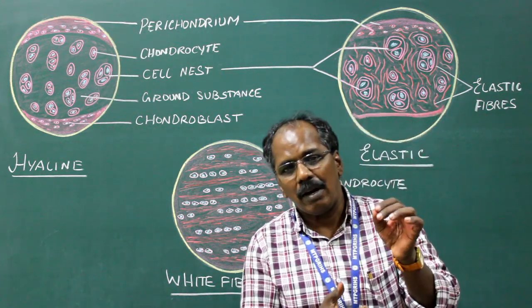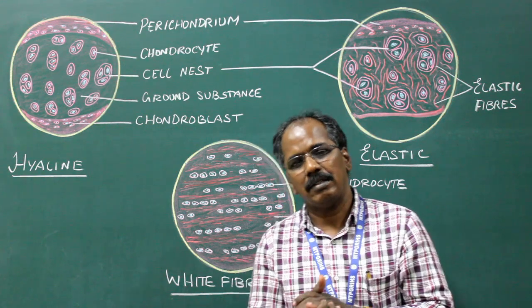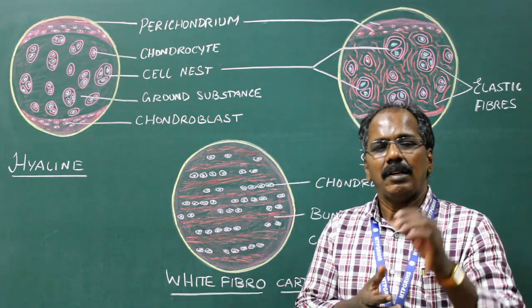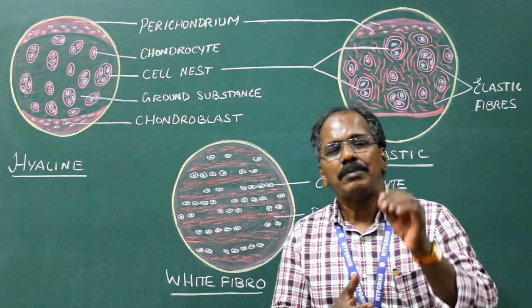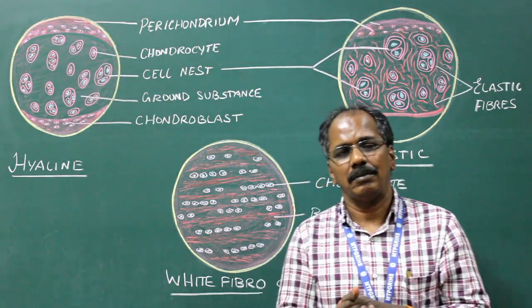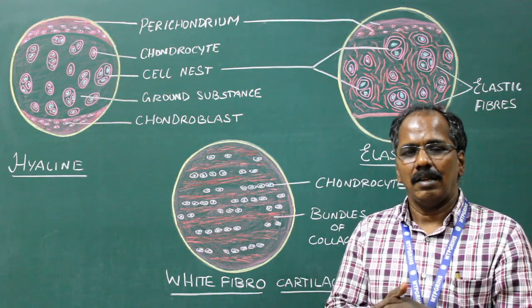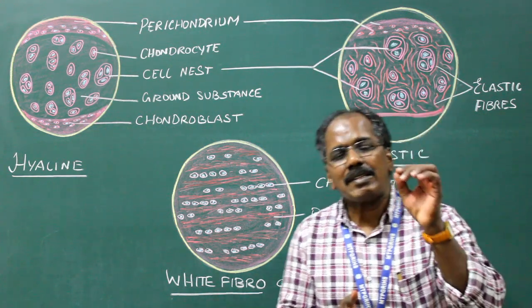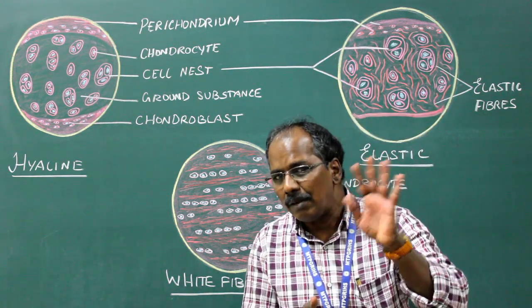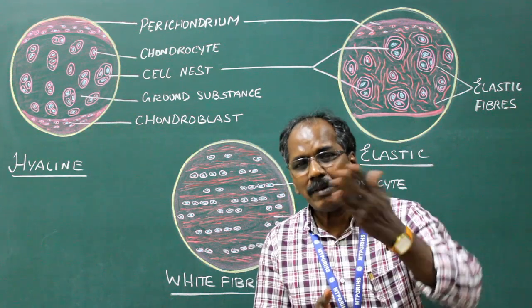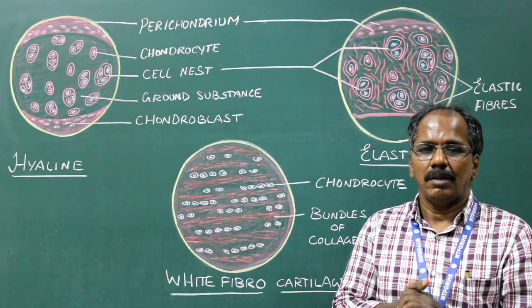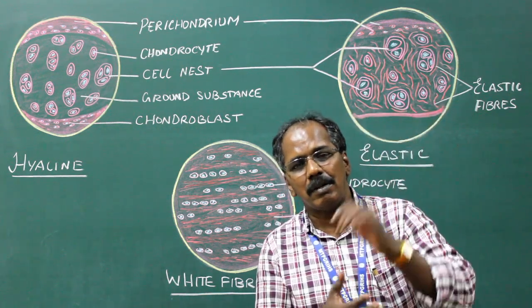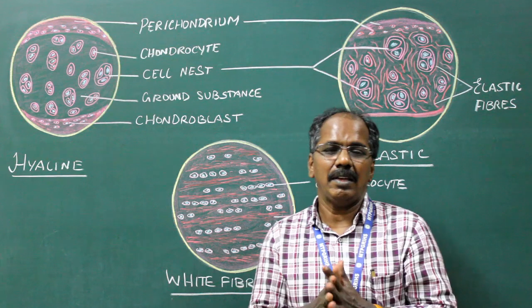Except for articular cartilage, the cartilage is lined by a covering known as perichondrium. A cartilage can never be converted into a bone. It can only be replaced by bone. The process of conversion of cartilage into bone is known as ossification.